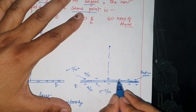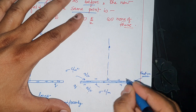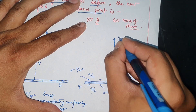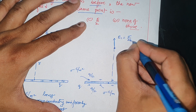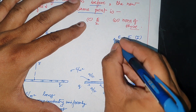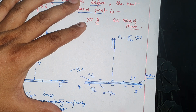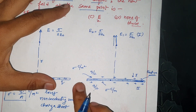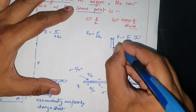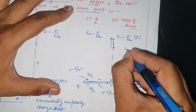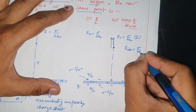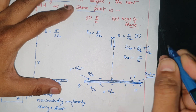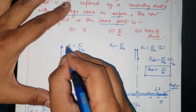From the first layer, the electric field E1 at this point equals σ/(2ε₀), directed outward. From the second layer, the field E2 also points in the same direction and also equals σ/(2ε₀). The net electric field of the entire conducting sheet at this point is in the same direction.